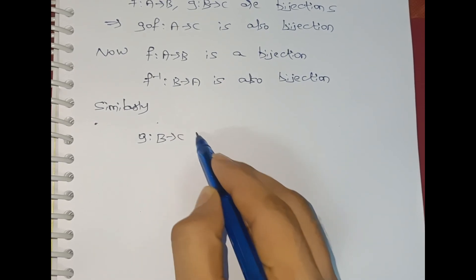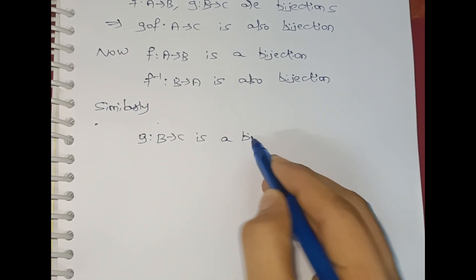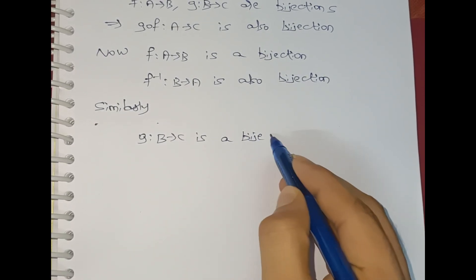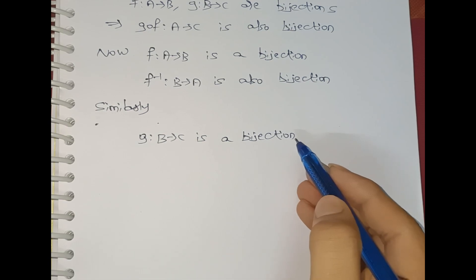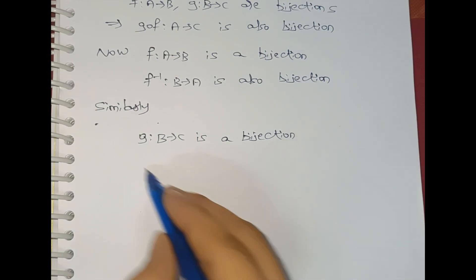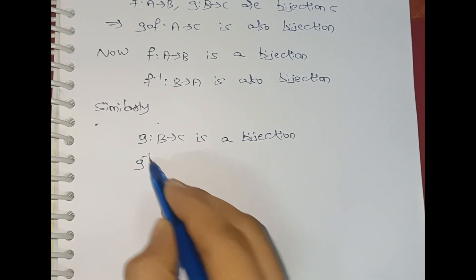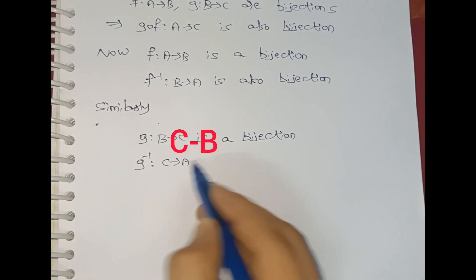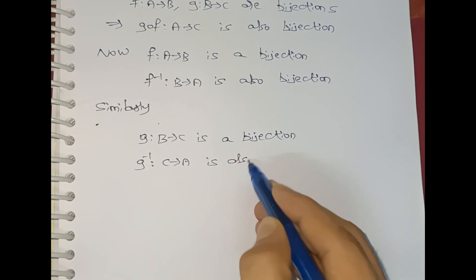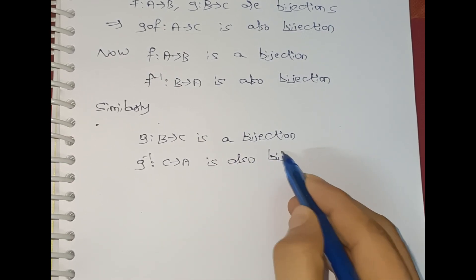Similarly, g mapping B to C is a bijection, so g⁻¹ mapping C to B — that is, g⁻¹ mapping C to A — is also a bijection.